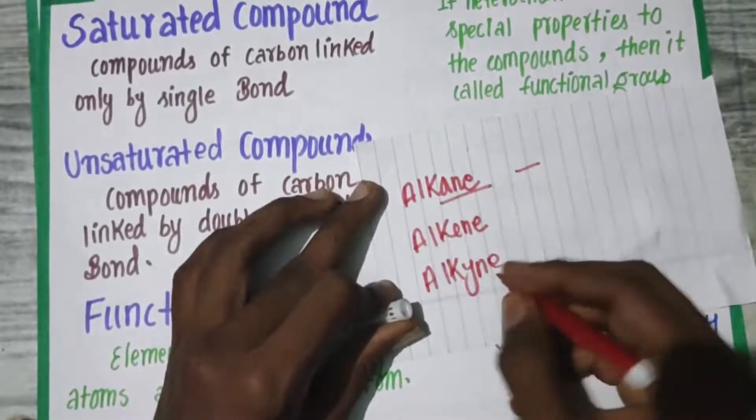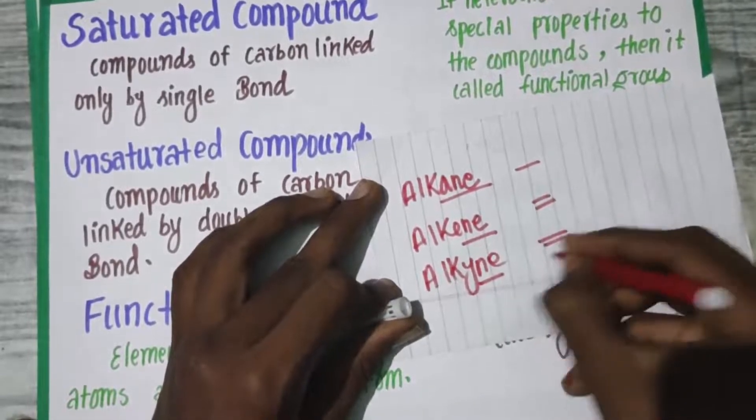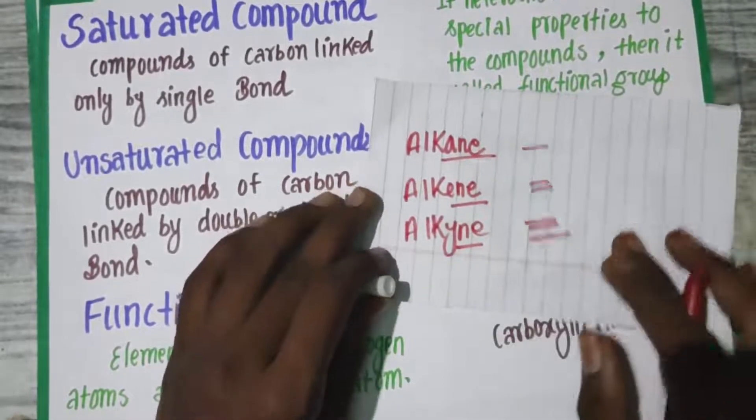Alkane indicates a single bond, alkene indicates a double bond, and alkyne indicates a triple bond. This is what you have to remember.